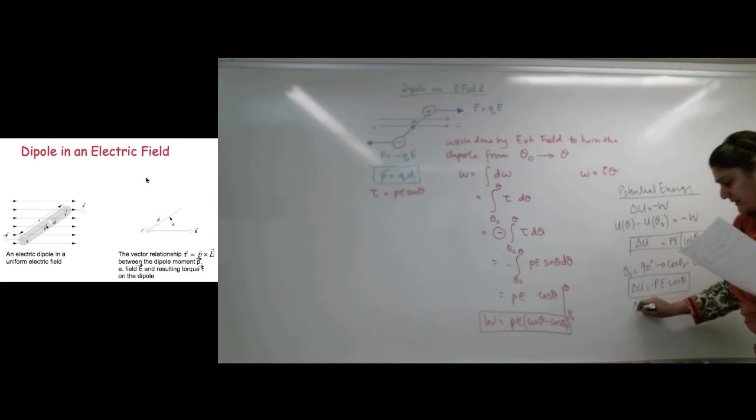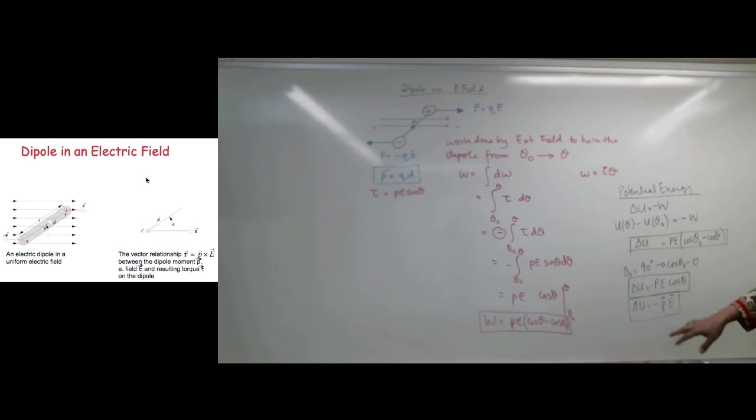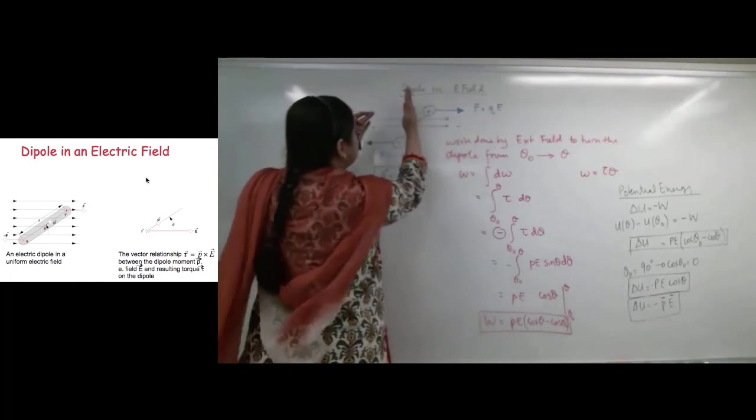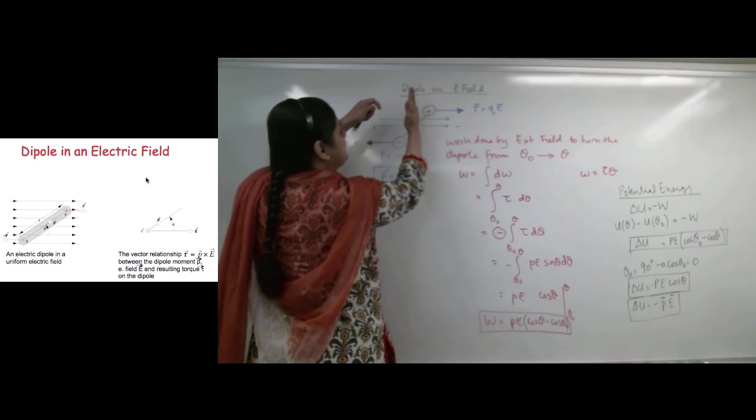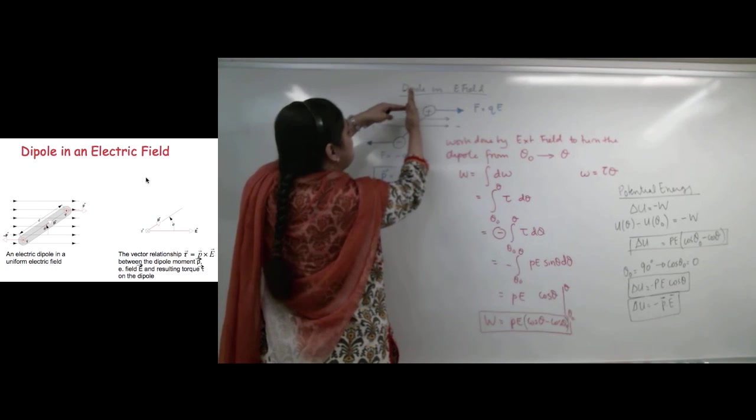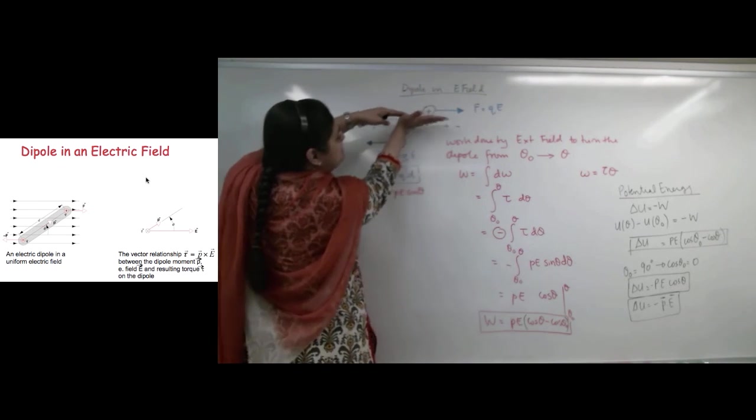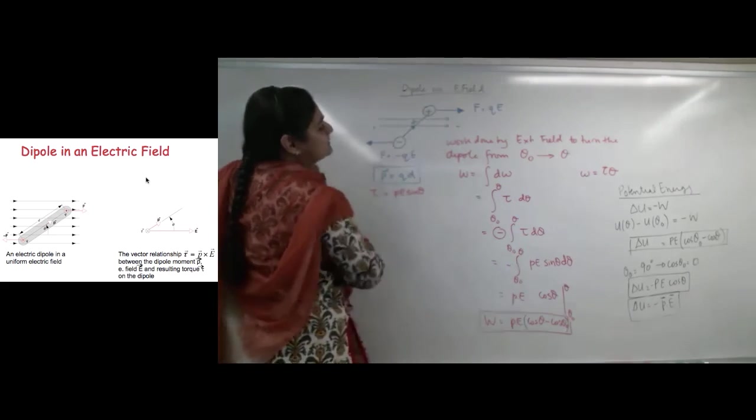Or, we can say delta U equals PE. So, that is a dot product. So, delta U is going to give you a dot product, P dot E. What does that mean? That means that U, or potential, is minimum when P and E are parallel. So, they are maximum when the potential is maximum when it is at 90 degrees to each other, and minimum when they are parallel to one another.